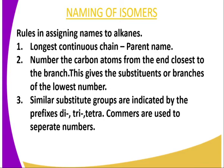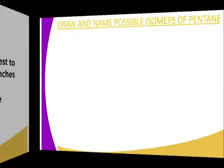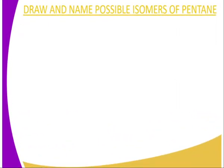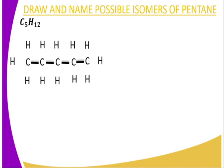We are going to use these rules to name the following alkane by drawing and naming the possible isomers of pentane. Pentane contains five carbon atoms with the molecular formula C5H12 from the general formula. Five carbon atoms in a chain bonded to give us a straight chain, and each of these carbon atoms is saturated, having the maximum number of hydrogen possible, covalently bonded to the carbon atoms. There we have our first structure.